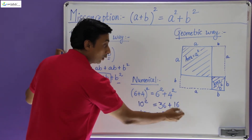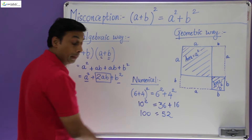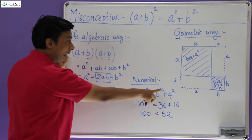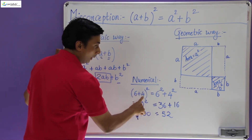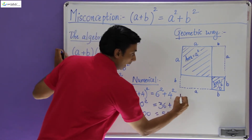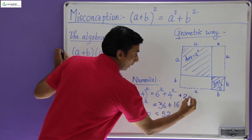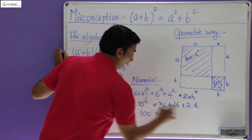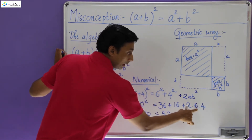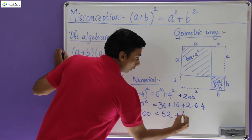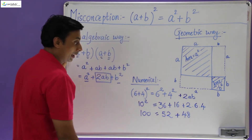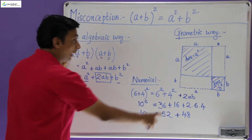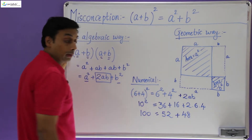This particular side needs something more so that the result will be 100. Since we know that the additional term is 2ab, let's see if that helps. My a is 6 and my b is 4. So a² + b² — let me add the 2ab term: 2 × 6 × 4 = 48. Now 52 + 48 = 100, which is indeed equal to the left hand side. Adding this 2ab term really made the equation hold true.